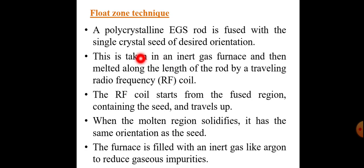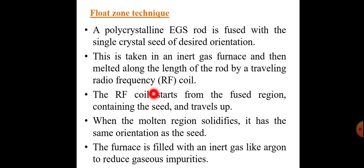The complete setup for the float zone technique is taken in an inert gas furnace. Usually the inert gas used is argon gas, for complete control of the process. If any other gas is present inside the glass environment, it will degrade the performance of the system. The complete setup is melted along the length of the rod by a traveling radiofrequency coil. The RF coil starts from the fused region containing the seed and travels upward. When the molten region solidifies, it has the same crystal orientation as the seed. The furnace is filled with inert gas like argon to reduce gaseous impurity.